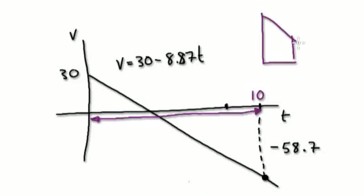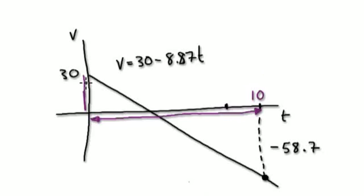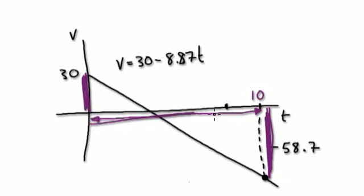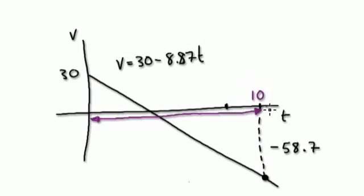The trapezium rule works like this: get this height plus this height, divided by 2 — that gives you the average — and then times the width across. Even though our trapezium is on the negative side, it will still work. Get this distance, add this distance, divided by 2 for the average, then times the width across. The trapezium rule still works even if part of the shape is on the negative side.